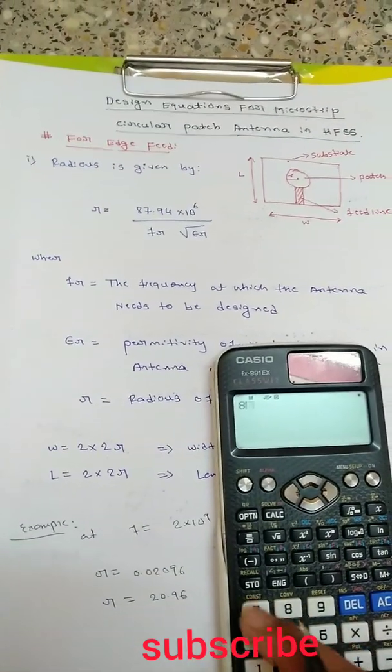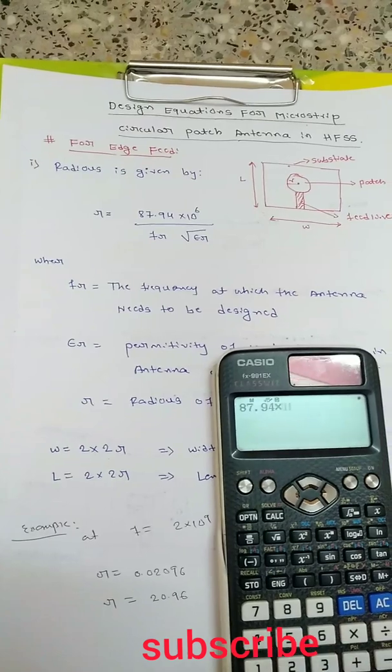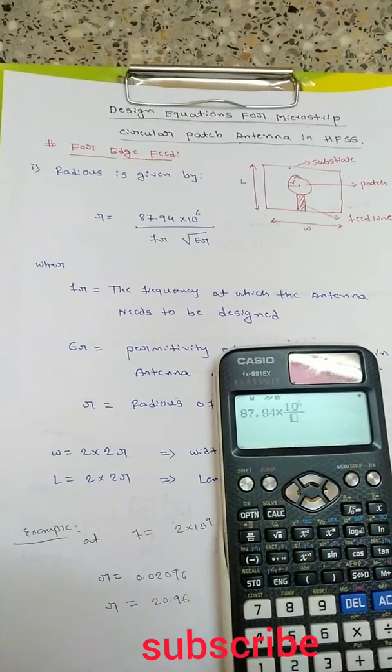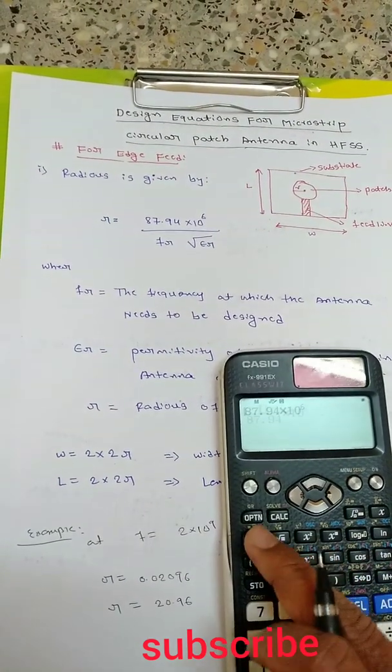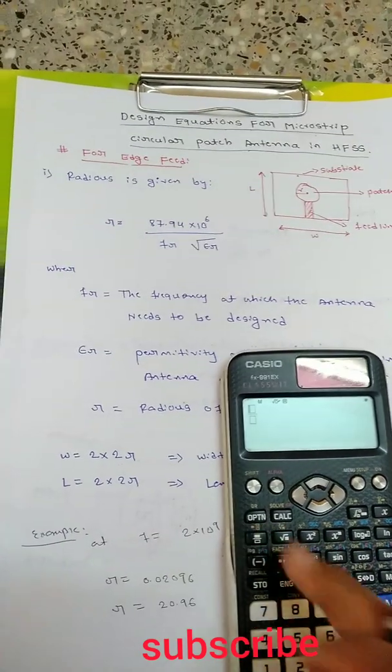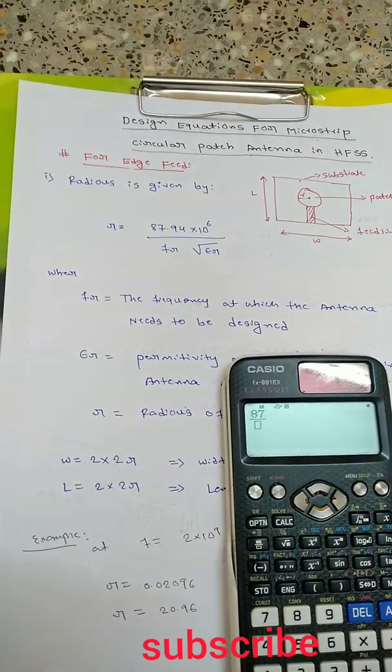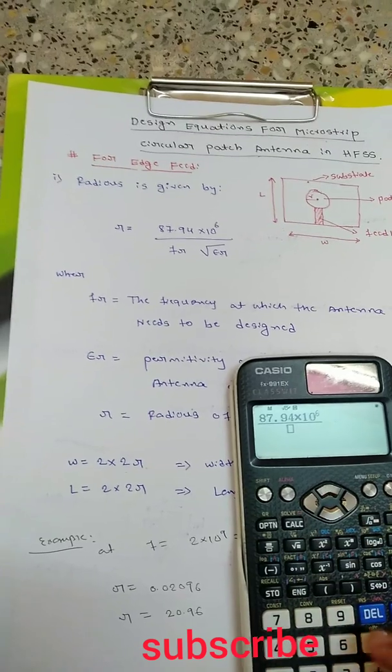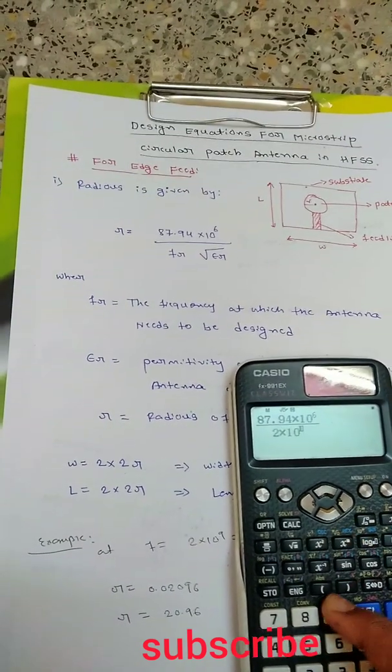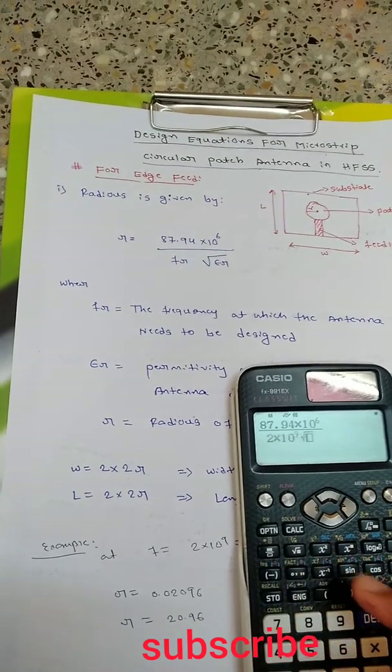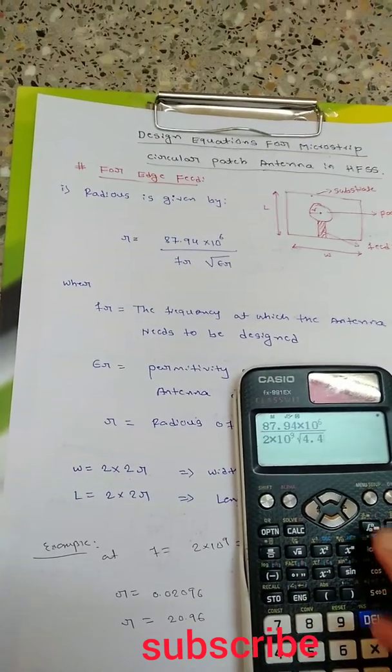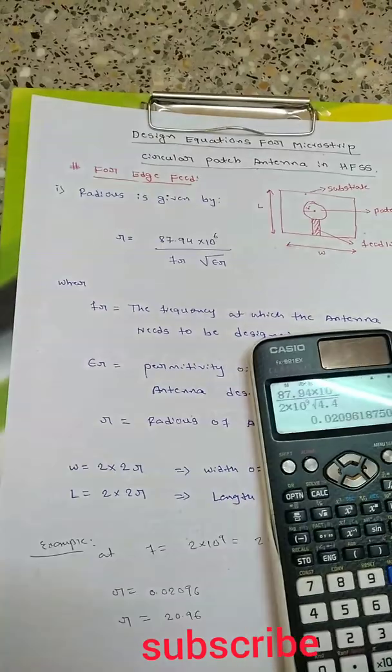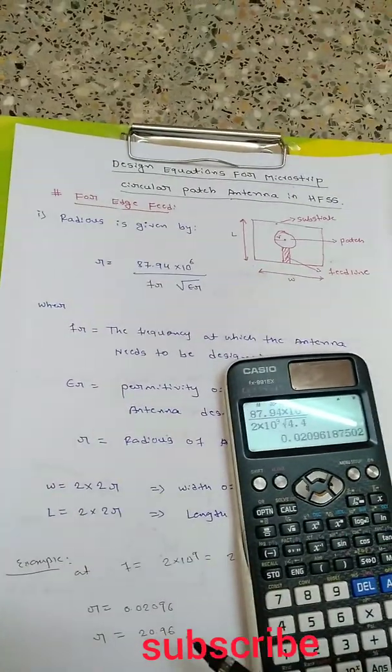87.94 x 10 to the power of 6 divided by f_r which is 2 x 10 to the power 9, times epsilon_r which is 4.4 because we are using FR4 material. This equals 0.02096.